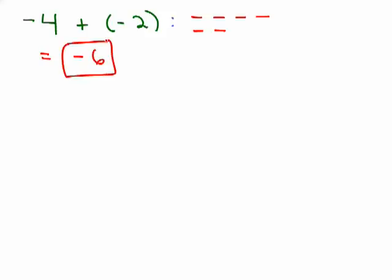How about if we did 3 plus 2? You know the answer is 5, right? But if you were going to show it with a picture, you'd have 3 positives and 2 more positives, so you could see the answer is positive 5.